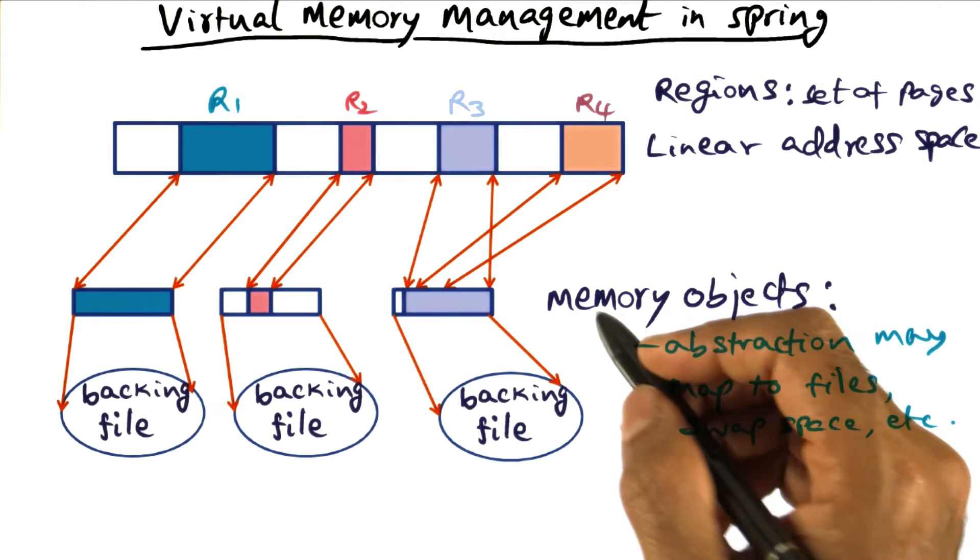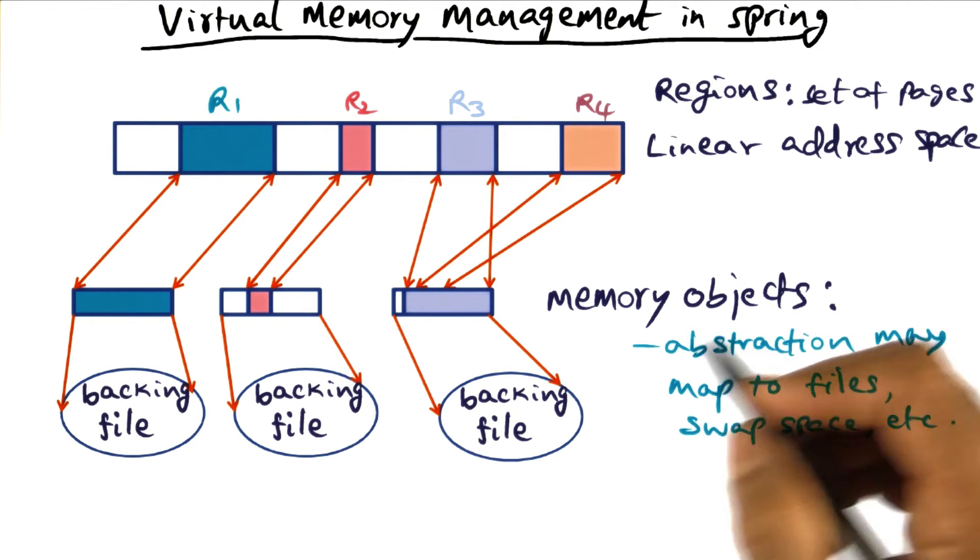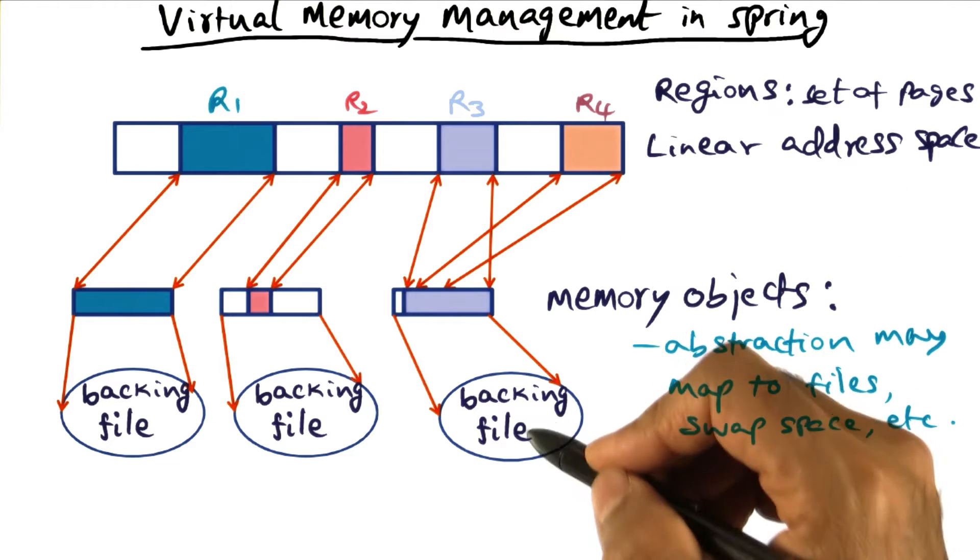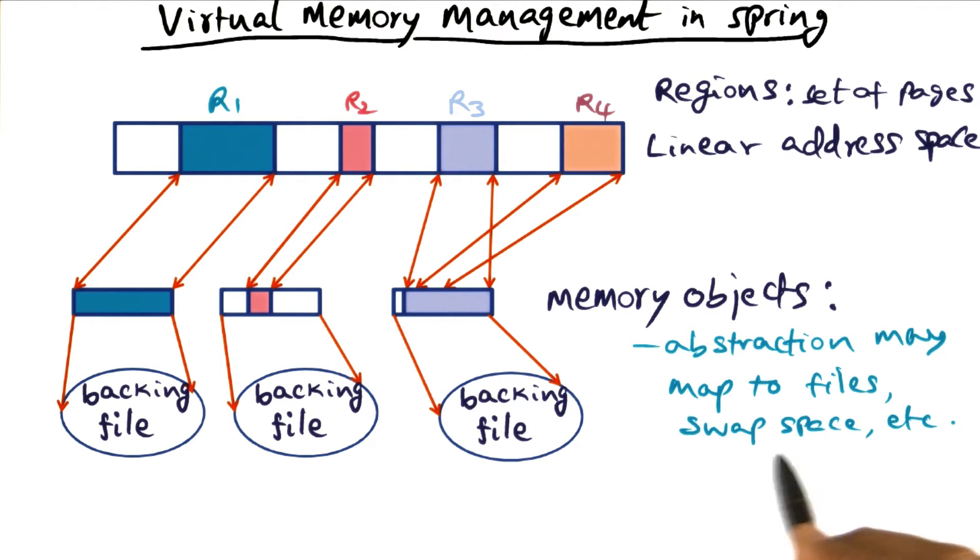The abstraction of a memory object allows a region of virtual memory to be associated with a backing file, or it could be the swap space on the disk, and things like this.